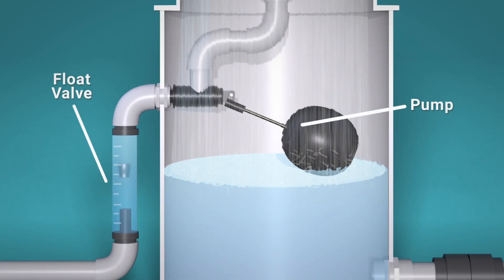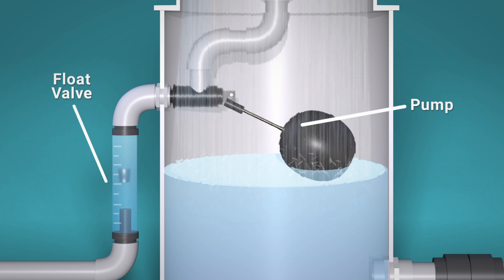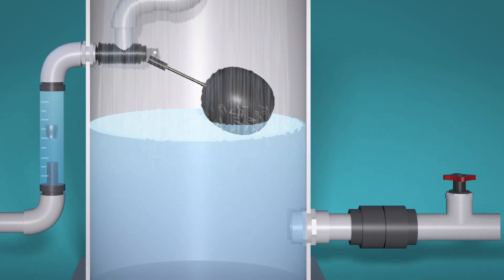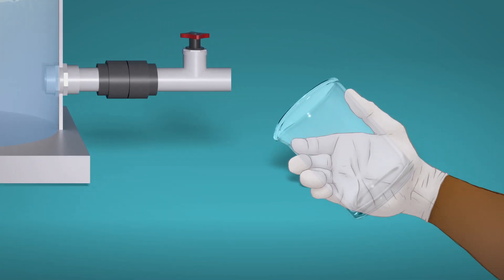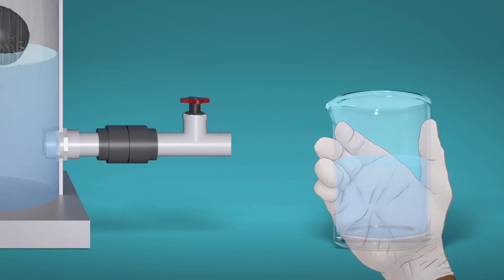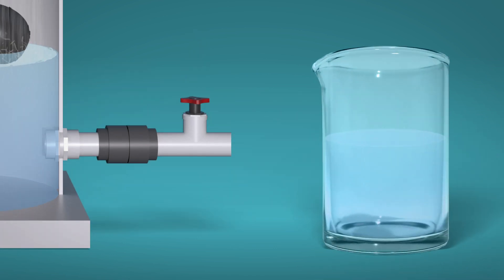The float valve and pump prevent the water inside the tank from overflowing and ensure proper contact with the chlorine tablets. When the system works correctly, your water will be consistently treated to inactivate microorganisms.